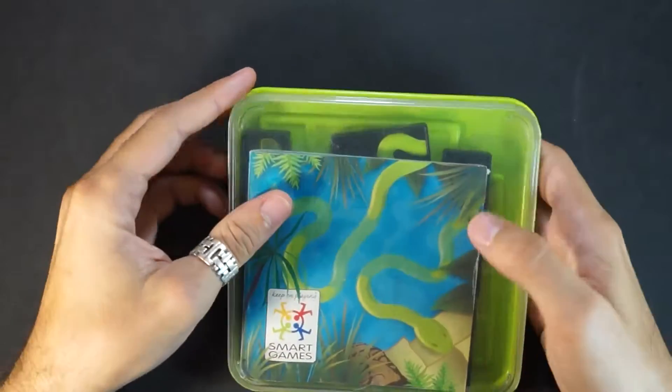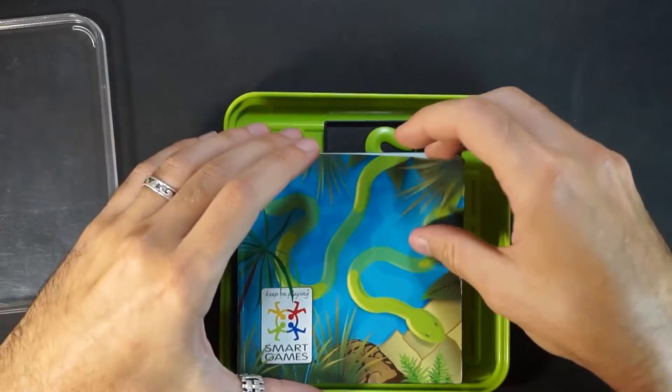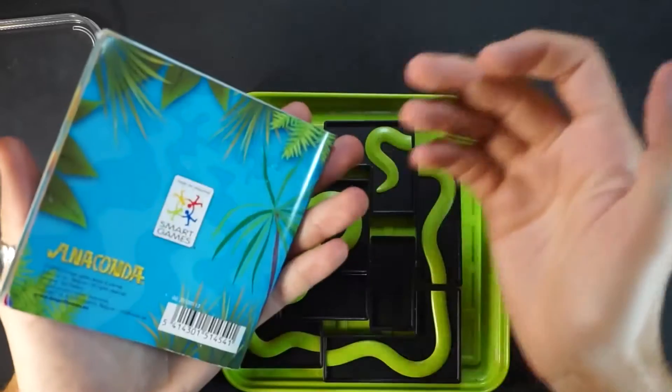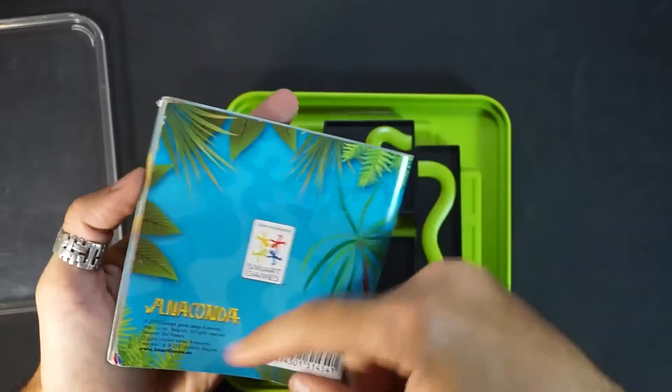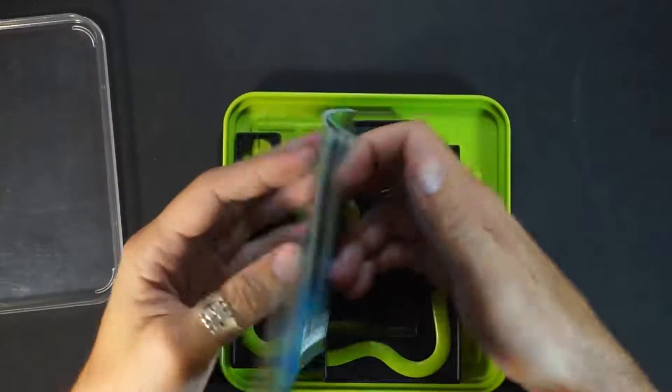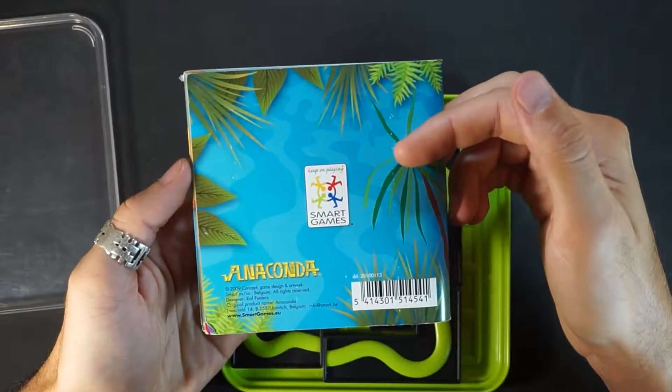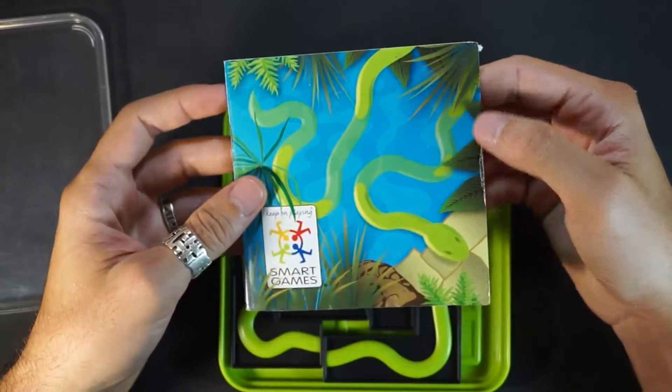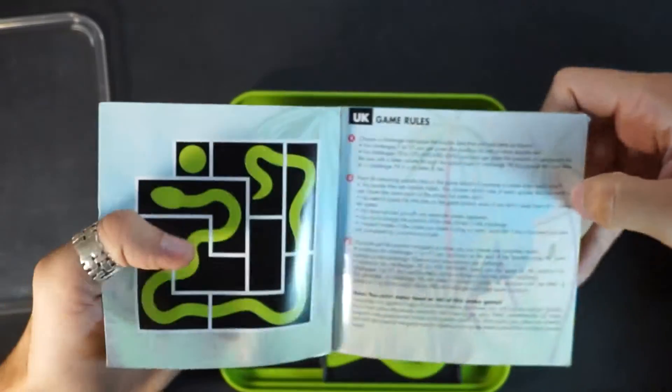The game comes in a typical Smart Games hard plastic box. Inside you'll find the booklet with the rules, challenges and solutions. It's a logic game by Raf Petters, author of Chicken Shuffle. It costs around 15 euros. It's for age 7 and up and has a small format which is perfect to take with you anywhere you go.